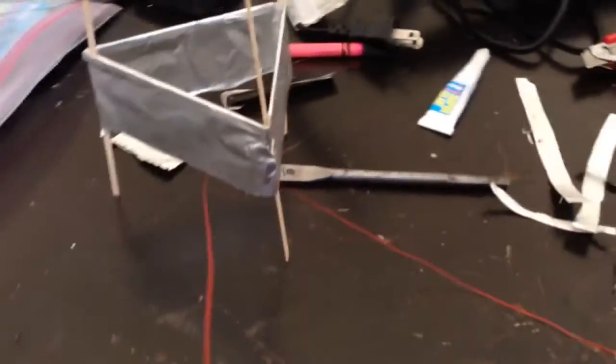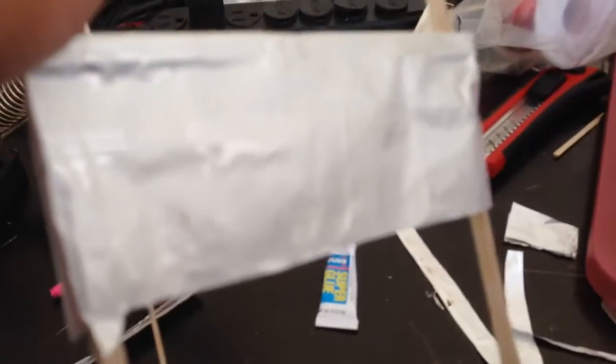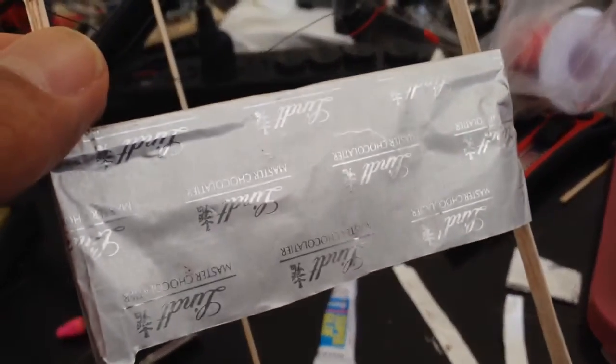So I just made this one, which has lighter foil. It actually uses a thinner foil. You can get this foil off of Lindt chocolate bars. You can see that right there. Lindt chocolate bars. It's very thin.